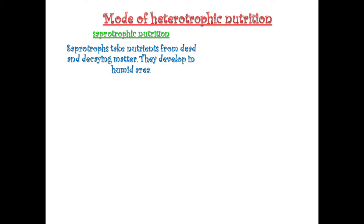Now we will study the modes of heterotrophic nutrition. The first is saprotrophic nutrition. Saprotrophs take nutrients from dead and decaying matter and develop in humid areas or during the rainy season.